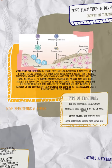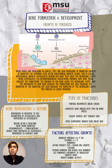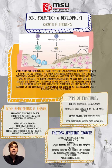While bones are increasing in length, they are also increasing in diameter. Growth in diameter can continue even after longitudinal growth ceases — this is called appositional growth. Osteoclasts resorb old bone lining the medullary cavity, while osteoblasts via intramembranous ossification produce new bone tissue beneath the periosteum. The erosion of old bone along the medullary cavity and deposition of new bone beneath the periosteum not only increases the diameter of the diaphysis but also the diameter of the medullary cavity — a process called modeling. In adult life, bone undergoes remodeling, in which resorption of old and damaged bone takes place on the same surface where osteoblasts lay new bone to replace what was resorbed.